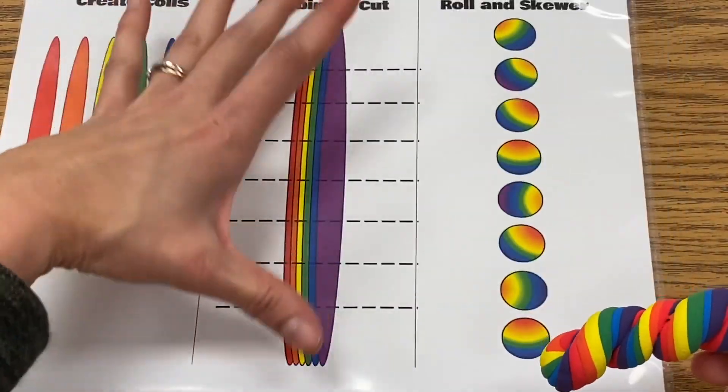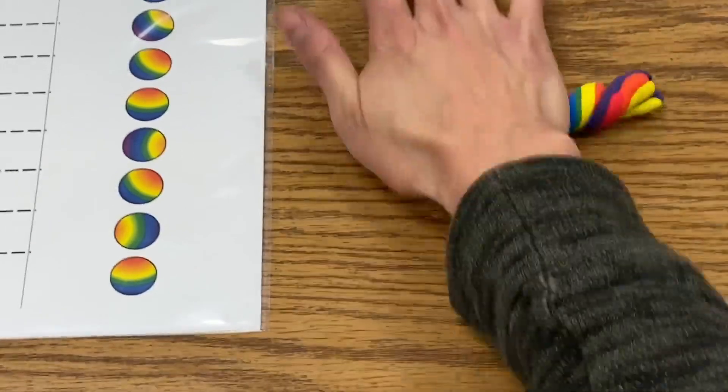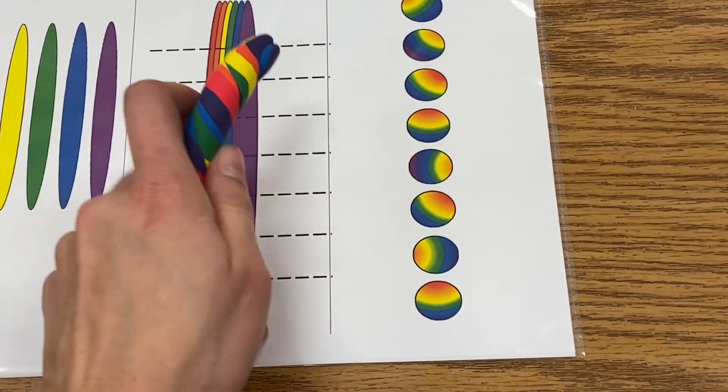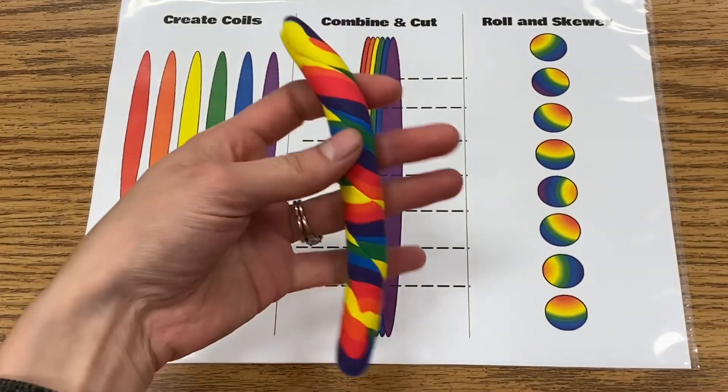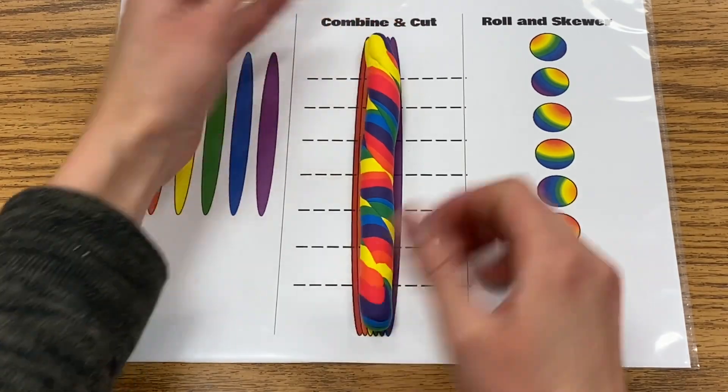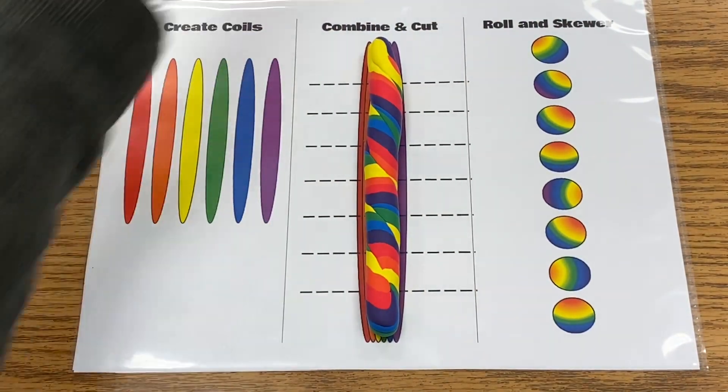Once you've twisted it once or twice, then you're going to roll it out to be about the size of the giant coil you see here. So I'm going to take that and roll it out to about the size that I see on my paper. That's pretty cool. All right, I've got one long coil.